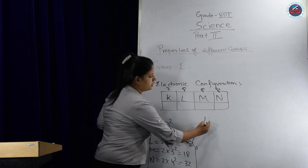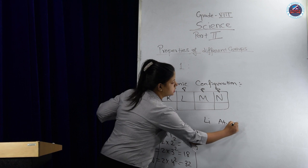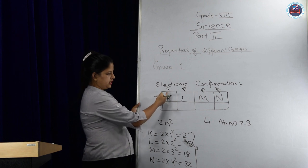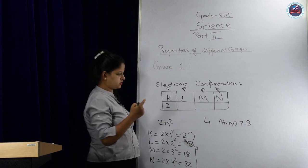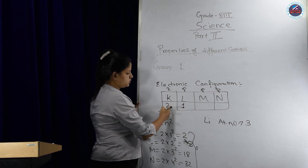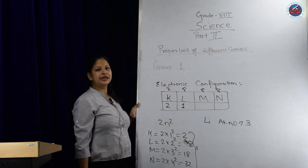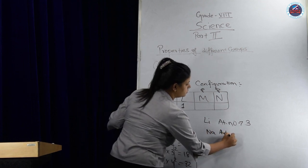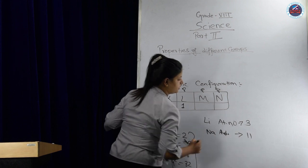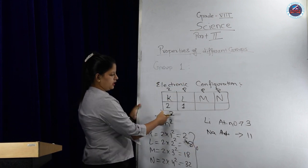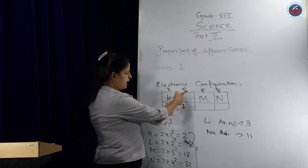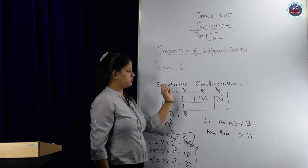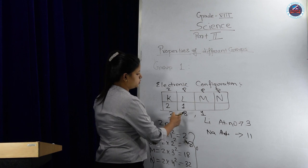For lithium, atomic number was 3. Out of 3 electrons, in K we can keep only 2, so 1 extra goes to L. So 2 and 1 equals 3, that is how it was done for lithium.